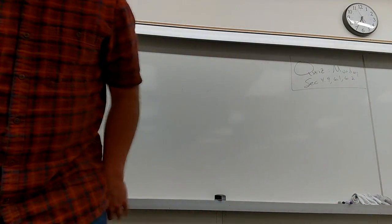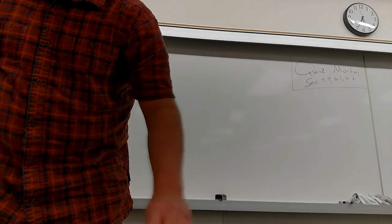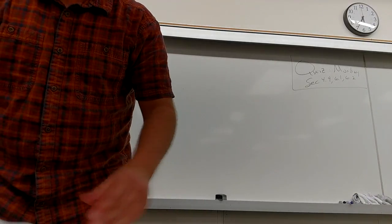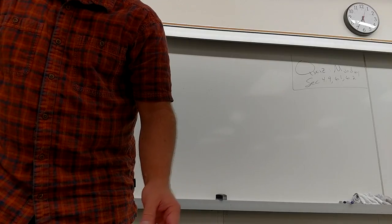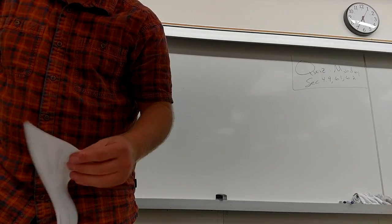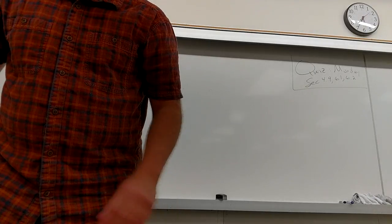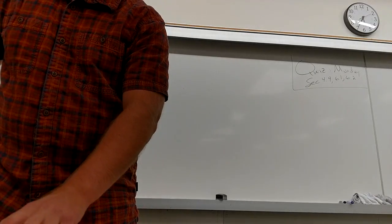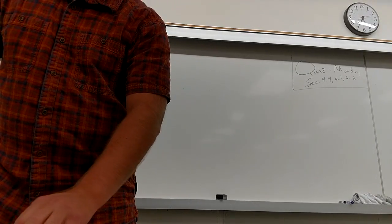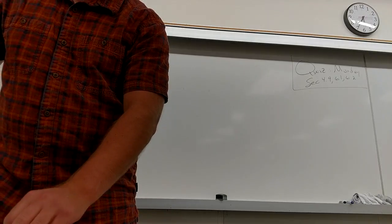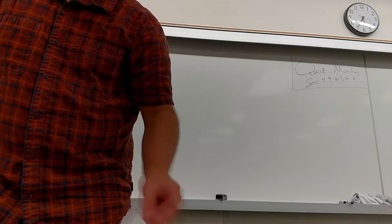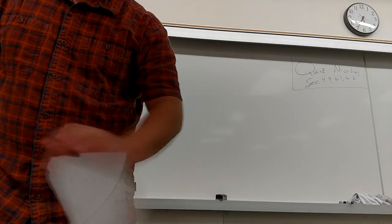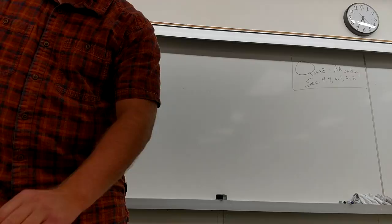Alright, so this problem says to use a series from 2, or several series from 2 if you need to, and long division to find the first four non-zero terms. They give one example using multiplication: e to the x times sine x.